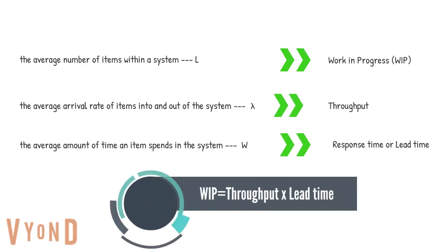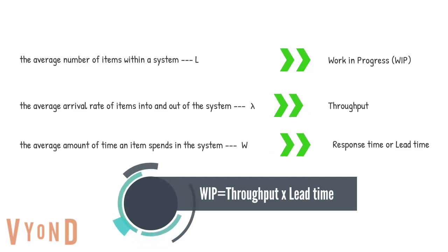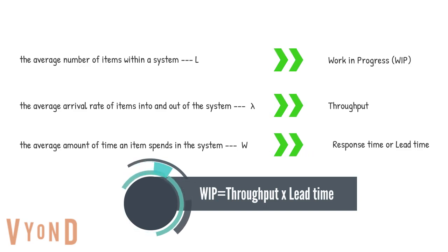Now, the formula can be presented as below: WIP equals throughput times lead time. WIP makes the lead time longer, resulting in slower task completion. Also, if the other two variables are given, we can figure out the third one. Because of that, Little's Law formula can show you how to optimize the workflow and productivity.